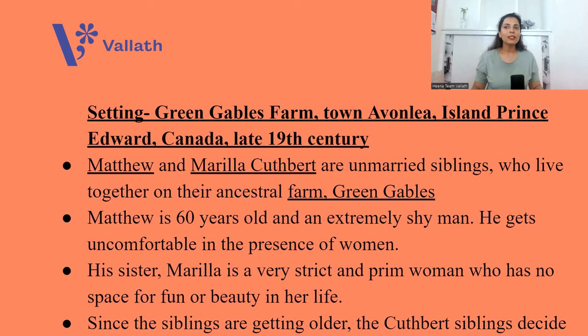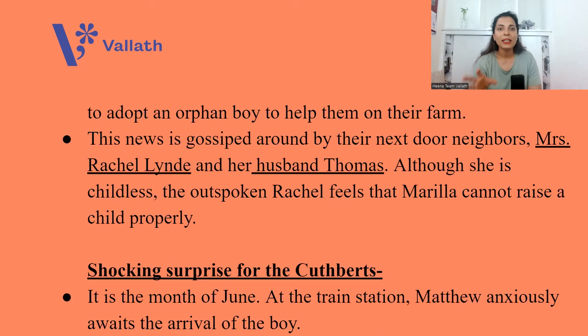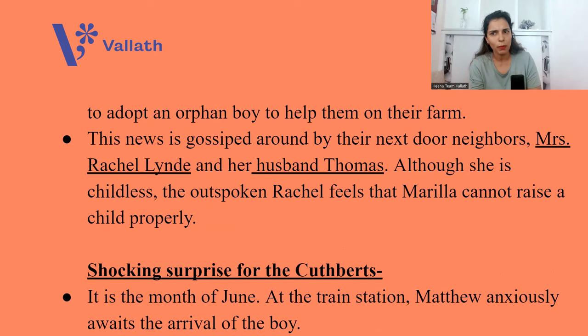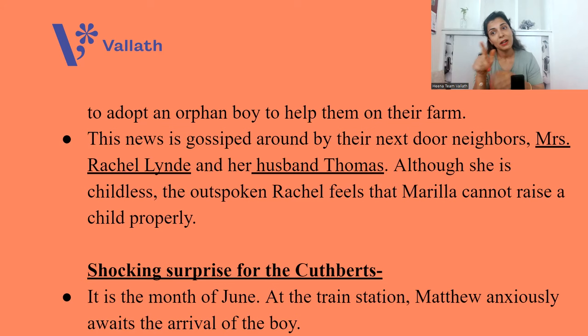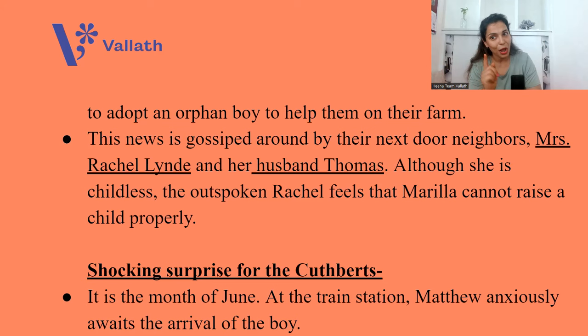Since the siblings are getting older, the Cuthberts decide to adopt an orphan boy who will help them on their farm. During that time in Canada, being foster parents to children was very common — from an orphanage, you would call for an orphan child and raise that child as your own. Many foster parents acted very cruelly with orphan children, but many kept them with love and care.